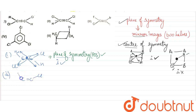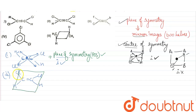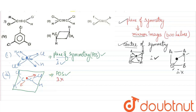Now the second compound: C double bond C, this side Cl, other side C, one side H and other side H. The plane to divide this compound — imagine this whole structure lying on a table. The plane passing along the molecular plane cuts Cl, Cl, H, H equally into two halves. So plane of symmetry is present. Now for the center of symmetry: this side we have Cl, the other side we have H — first condition is not satisfied, so center of symmetry is not present.